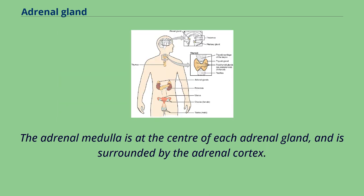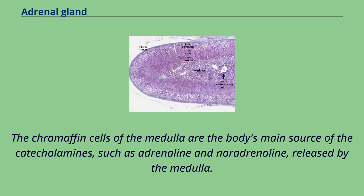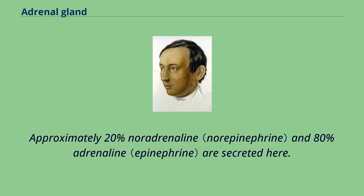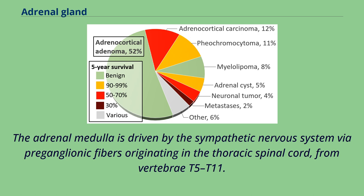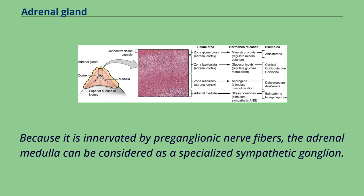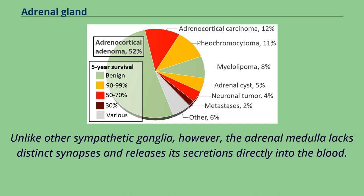The adrenal medulla is at the center of each adrenal gland and is surrounded by the adrenal cortex. The chromaffin cells of the medulla are the body's main source of the catecholamins, such as adrenaline and noradrenaline, released by the medulla. Approximately 20% noradrenaline and 80% adrenaline are secreted here. The adrenal medulla is driven by the sympathetic nervous system via preganglionic fibers originating in the thoracic spinal cord from vertebrae T5–T11. Because it is innervated by preganglionic nerve fibers, the adrenal medulla can be considered a specialized sympathetic ganglion. Unlike other sympathetic ganglia, the adrenal medulla lacks distinct synapses and releases its secretions directly into the blood.